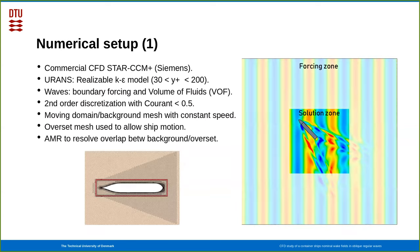The numerical setup that we employ uses the commercial CFD software STAR-CCM+ from Siemens. We do that in a URANS, unsteady Reynolds-Averaged Navier-Stokes approximation, using the realizable k-epsilon model, and also the k-omega SST model, with wall modeling, so the wall y-plus values are within 30 to 200. The waves are imposed by boundary forcing, as you can see on the right. We force all around to allow the ship to sail in all directions, and the waves are resolved using the volume of fluid approximation. We use second-order discretization of both time and space, with a Courant number of less than 0.5.